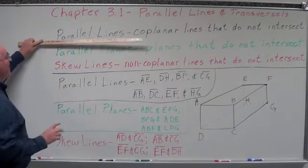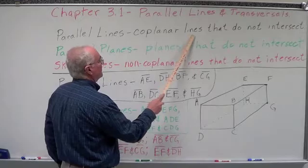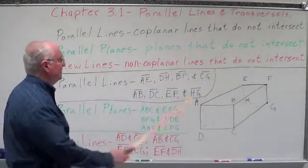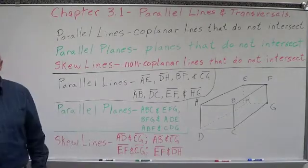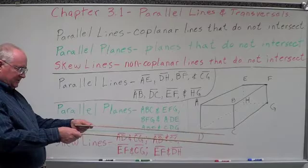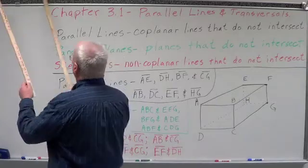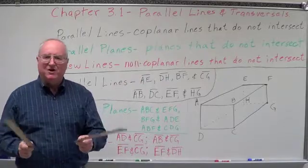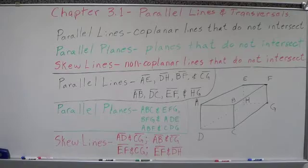Number one is parallel lines. Most of you know what that is. Typically you'd say lines that do not intersect or cross, but we're going to change that a little bit today and say coplanar lines that do not intersect. Coplanar means they're on the same flat surface — like railroad tracks, the surface of a desk, a table, or a board.